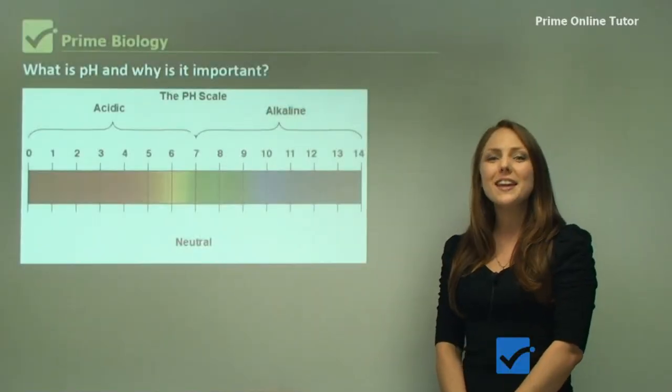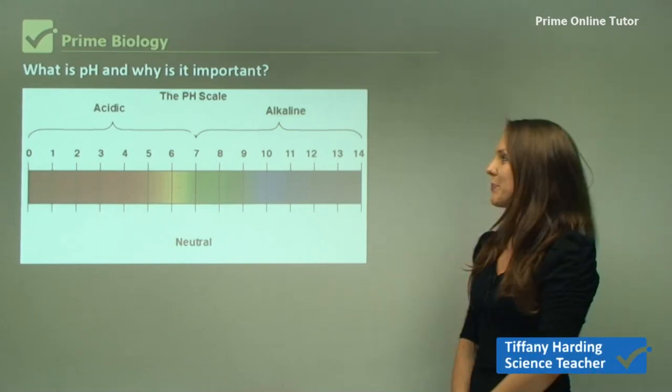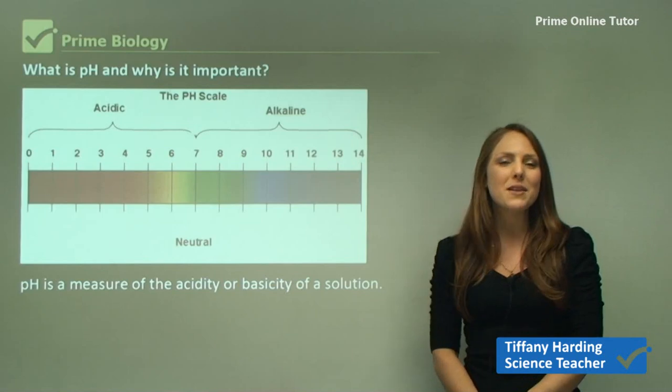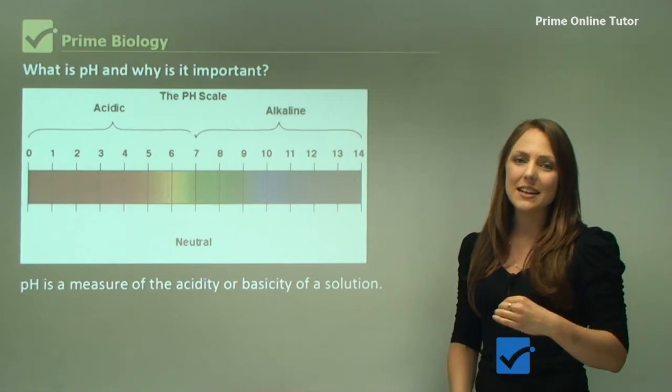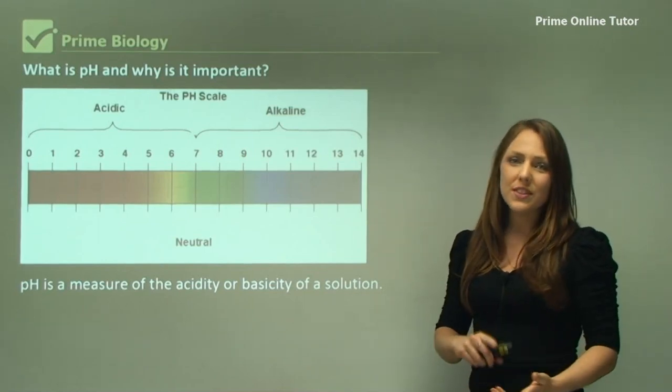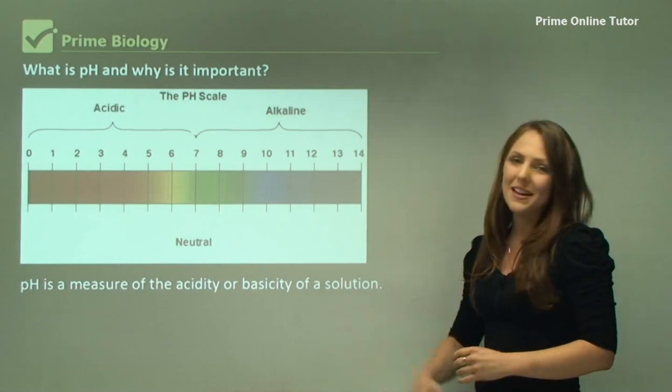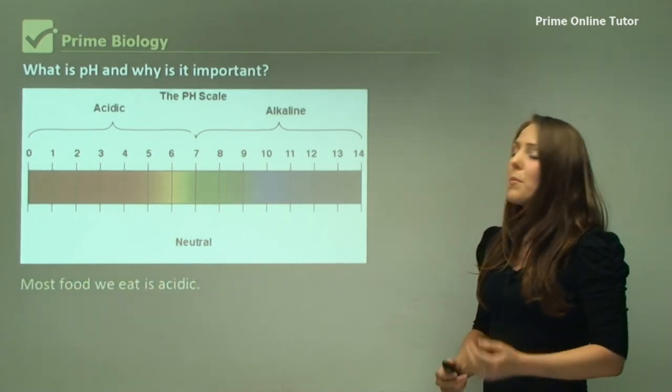In this video we're looking at what is pH and why is it important with enzymes. pH is a measure of the acidity or basicity of a substance or solution. Basicity - another word for that is alkaline - so you may read this in your textbooks and it just means basic.